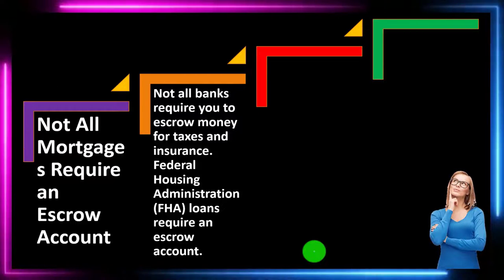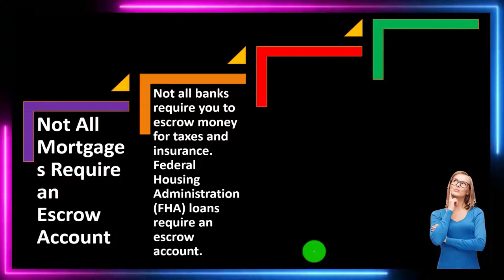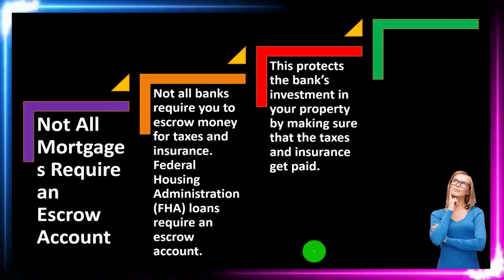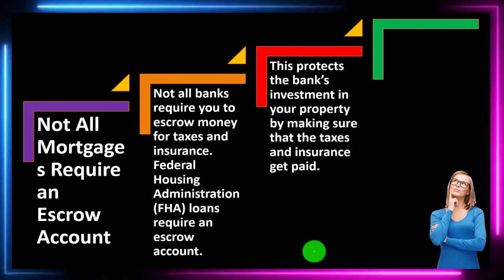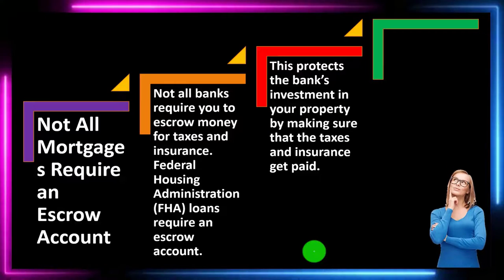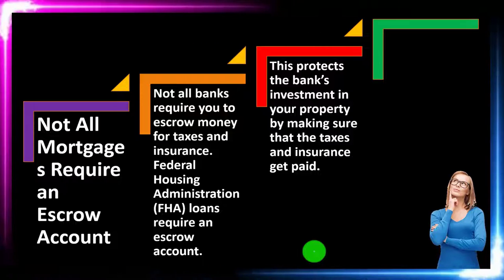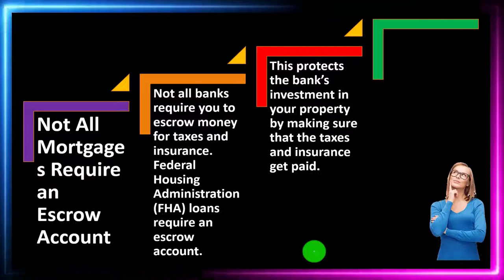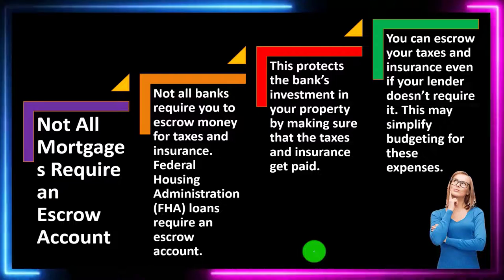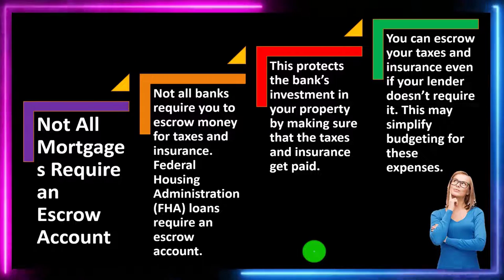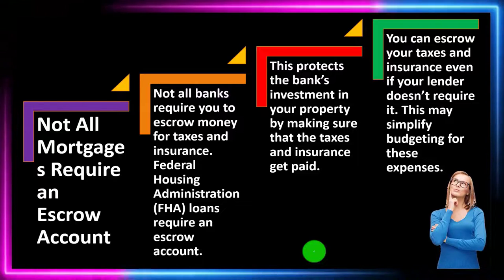Not all banks require you to escrow money for taxes and insurance. FHA loans do require an escrow account; this protects the bank's investment in your property by making sure taxes and insurance get paid. From the bank's perspective, if you're backed up on taxes and insurance, it signals you're less invested in the home, increasing the likelihood you might walk away. Putting a down payment up front and keeping all home-related costs current — like insurance and property taxes — makes the lender more comfortable.